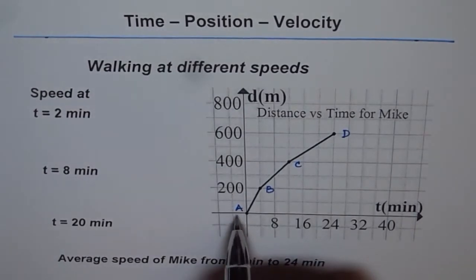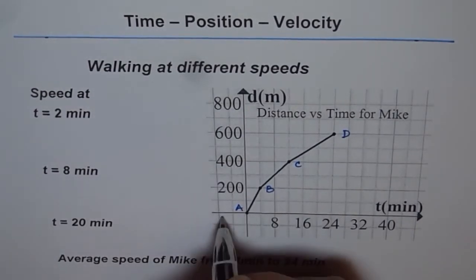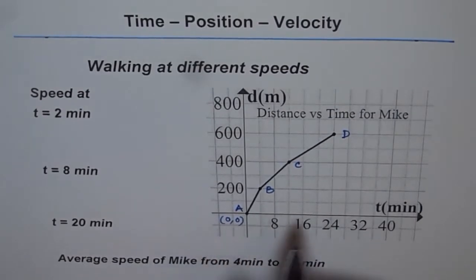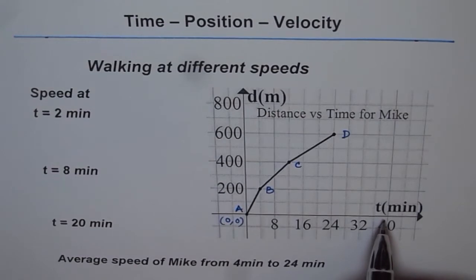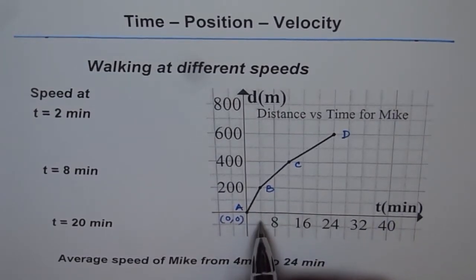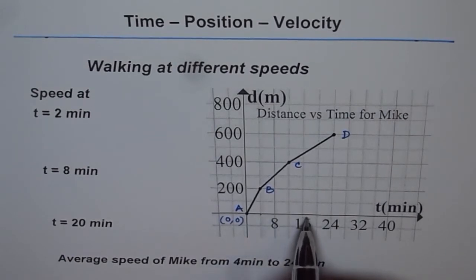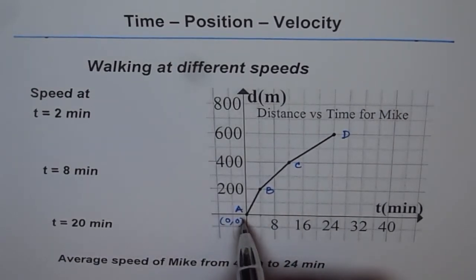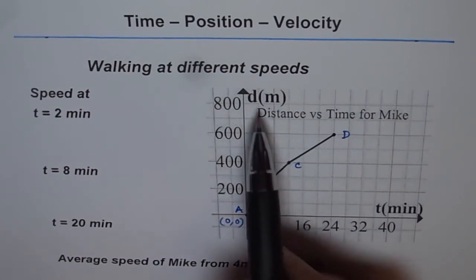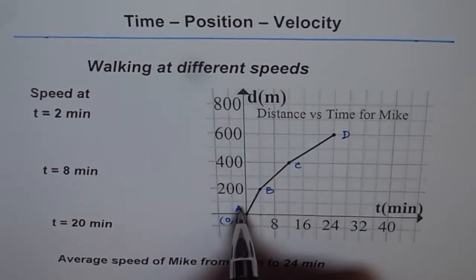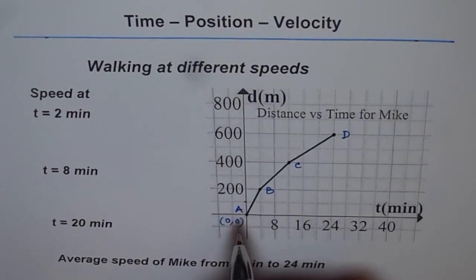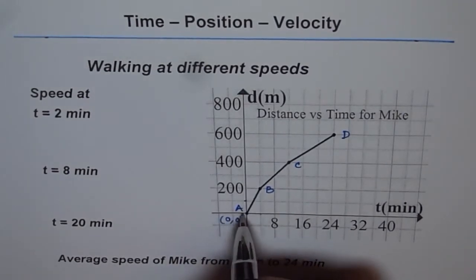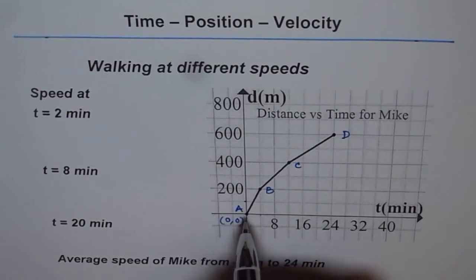Position A is (0, 0), meaning time is 0. Along the x-axis we have the independent variable time given in minutes; each small division is 4 minutes. Along the vertical axis we have distance D in meters, and each division is 100 meters.